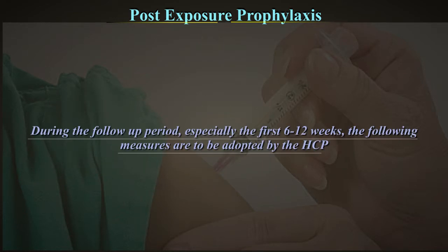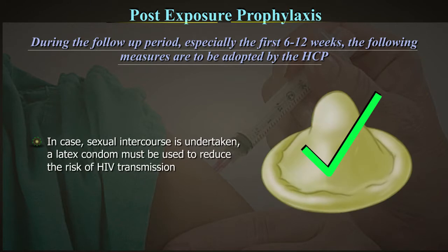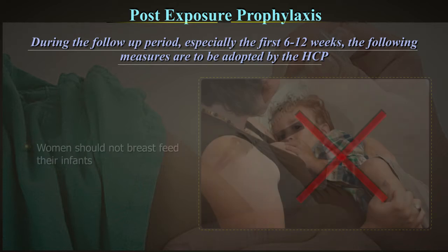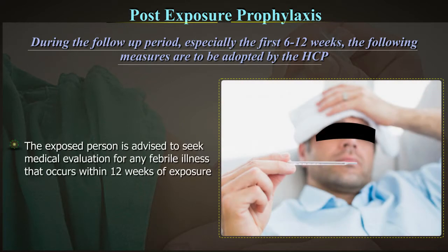During the follow-up period, especially the first six to twelve weeks, the following measures should be adopted by the healthcare professional: refraining from blood, semen and organ donation, and abstinence from sexual intercourse. If sexual intercourse is undertaken, a latex condom must be used to reduce the risk of HIV transmission. Women should not breastfeed their infants. The exposed person is advised to seek medical evaluation for any febrile illness that occurs within 12 weeks of exposure.